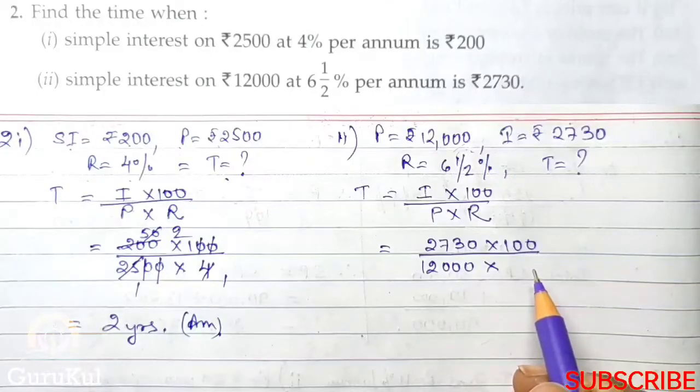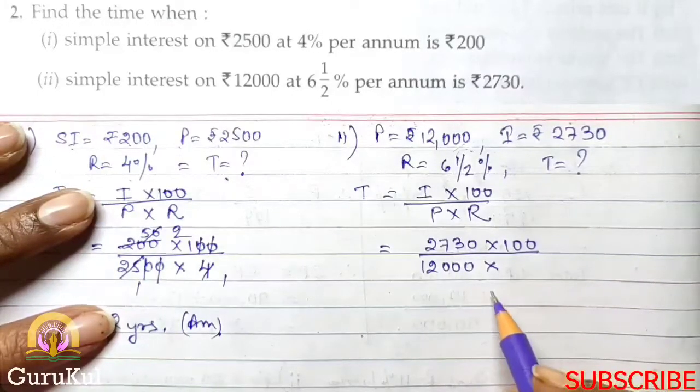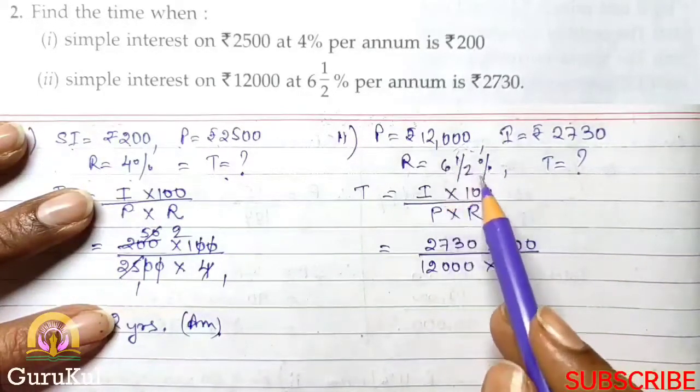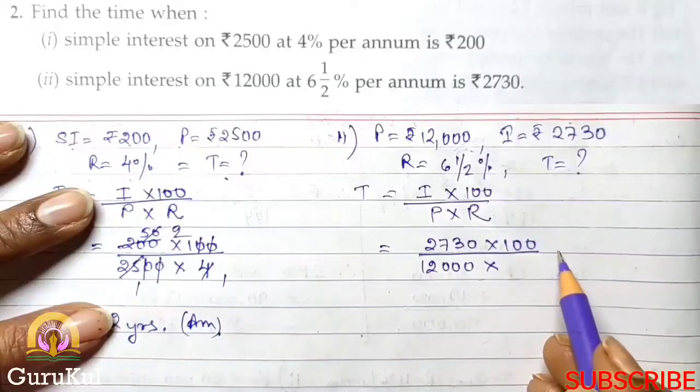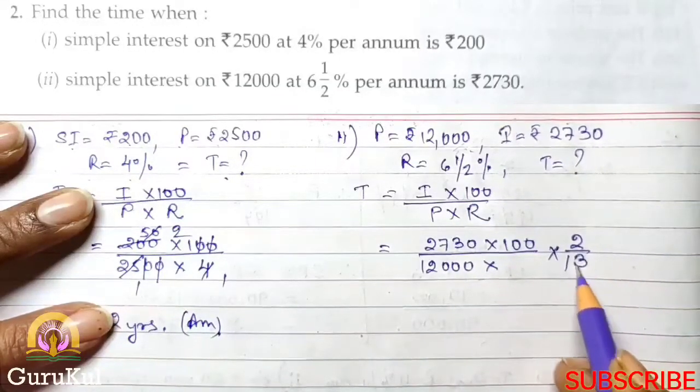Interest is 2730 into 100 by Principle is 12,000 into this is in fraction. So what will this be? This will become reciprocal. This becomes 13 by 2, so here it will be 2 by 13.